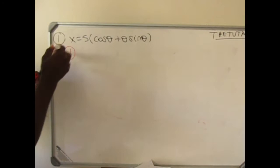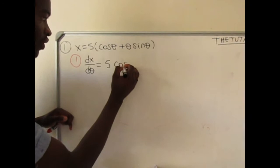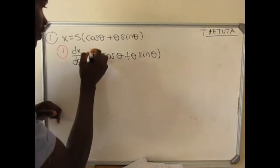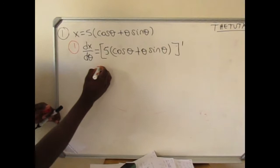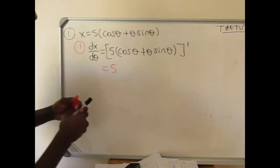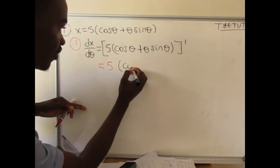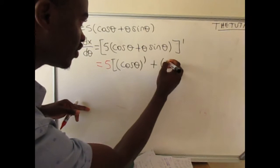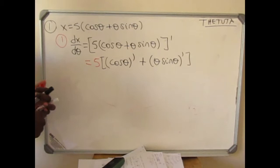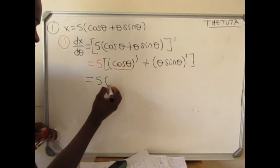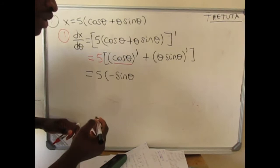Our first step is to look for the derivative of the first parametric function: dx/dθ. You have 5, a constant, times cosθ plus something. Since 5 is a constant, we keep it aside. Now we have a product rule here and a sum here. So we're going to take the derivative of cosθ plus the derivative of θ·sinθ. Here it's only one function. You have 5, and the derivative of cos gives us negative sinθ — under your formula sheet.